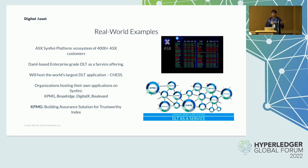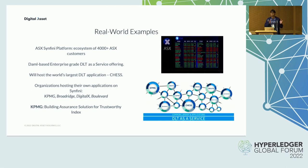Other vendors can develop customized and composable applications that run on Symphony, offering services to other participants and parties in the network. For example, KPMG is using Symphony to help create and operate New South Wales government's building assurance solution — a trustworthy index for buildings based on the source and quality of materials and contractors used in construction.